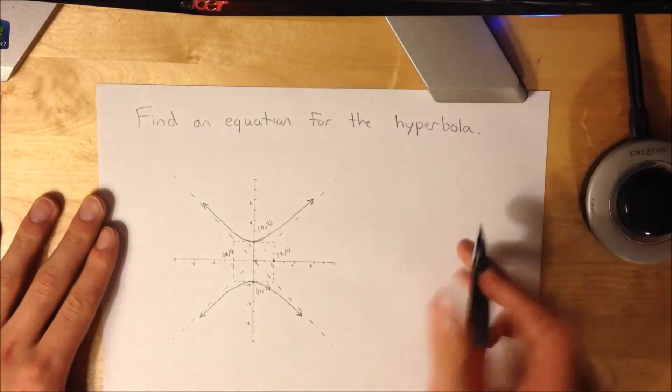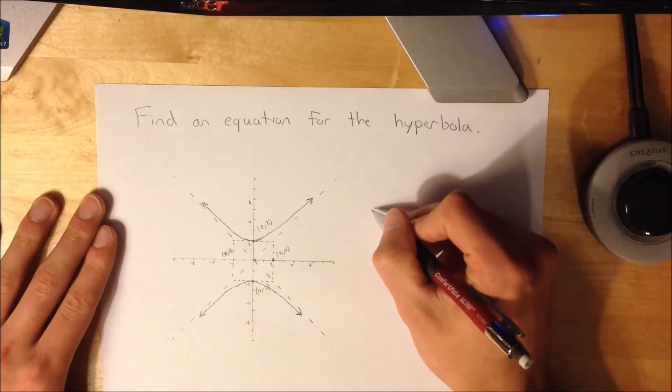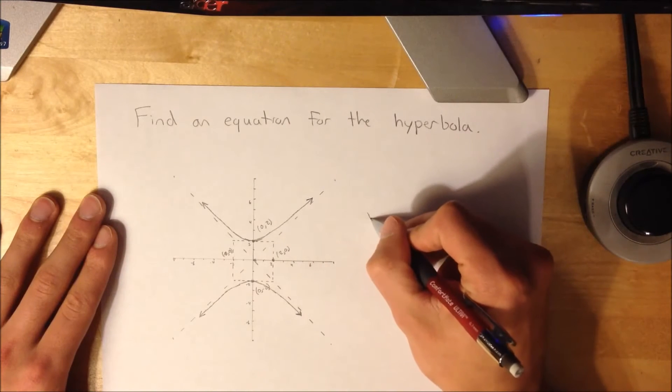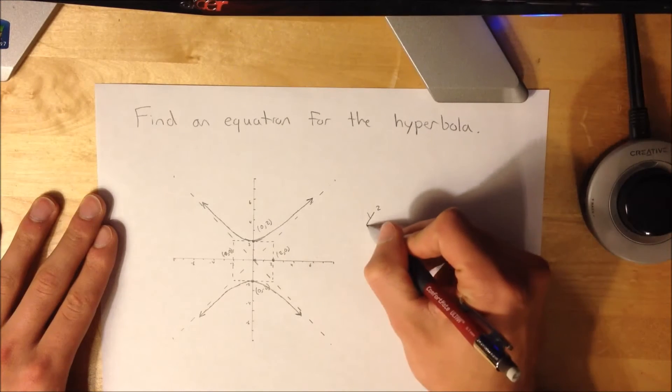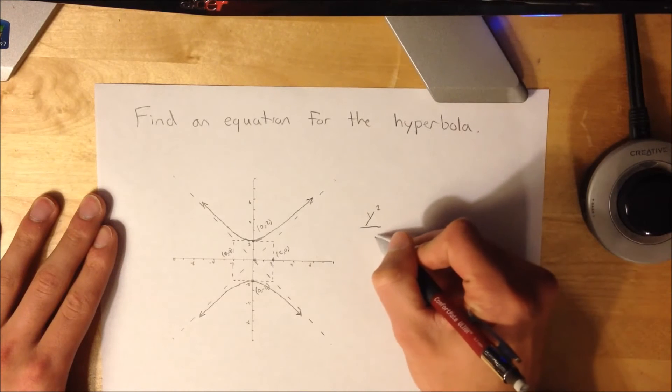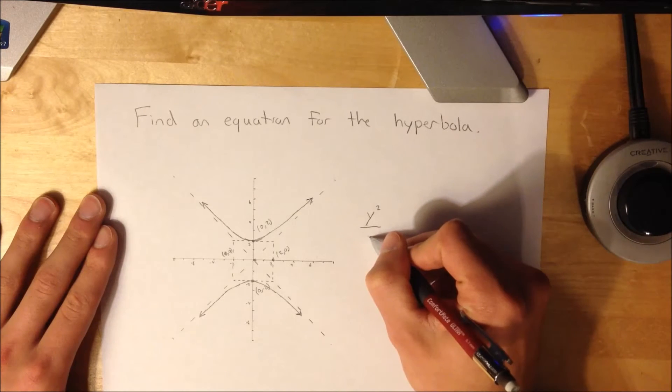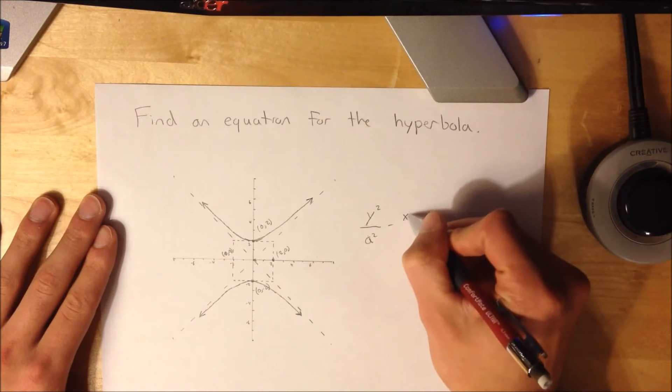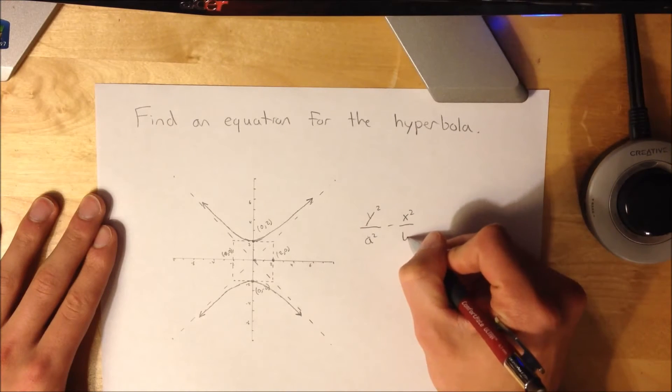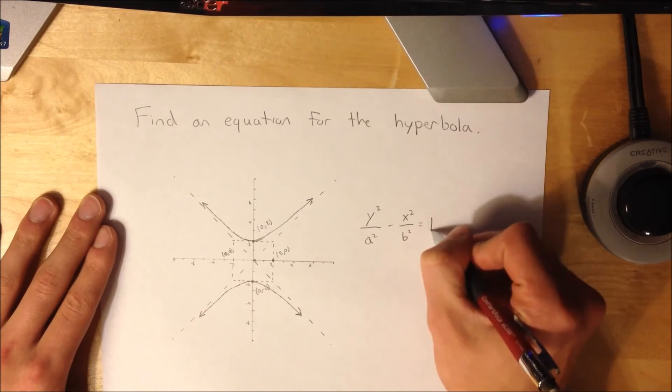To start off, I'll write the equation of a vertical hyperbola, the format of it: y squared over a squared minus x squared over b squared equals 1.